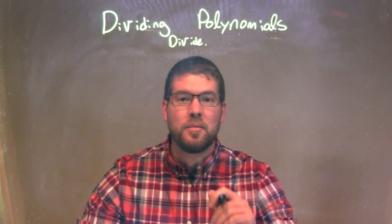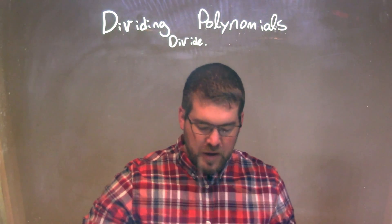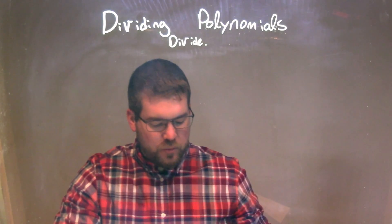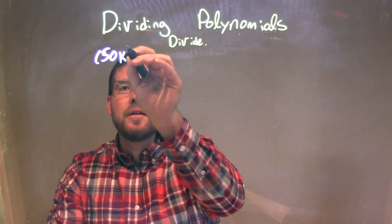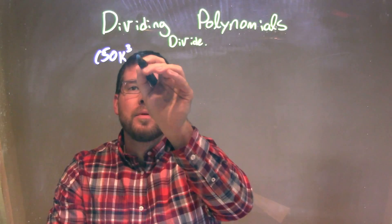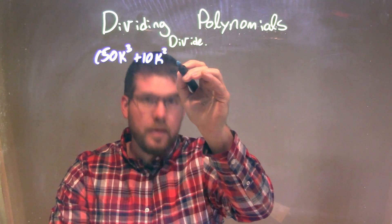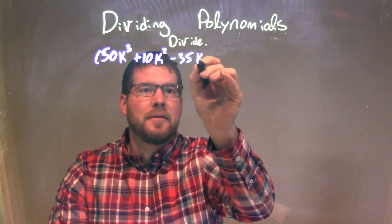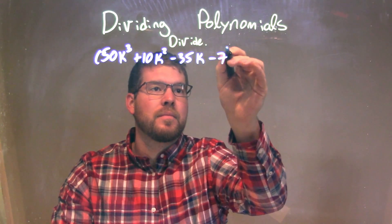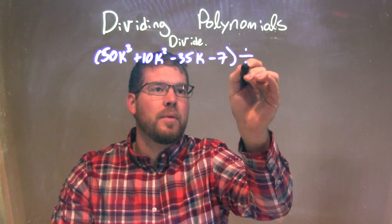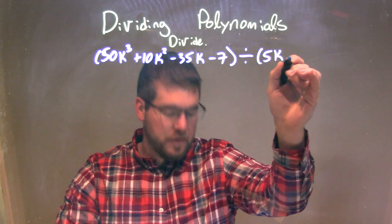Hi, I'm Sean Gannon, and this is MinuteMath, and today we're going to learn about dividing polynomials. So if I was given this problem: 50k³ plus 10k² minus 35k minus 7, divided by 5k minus 4.